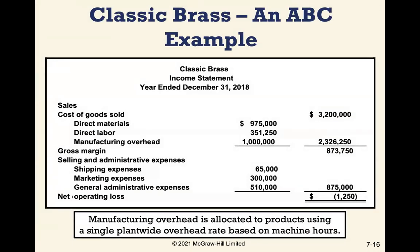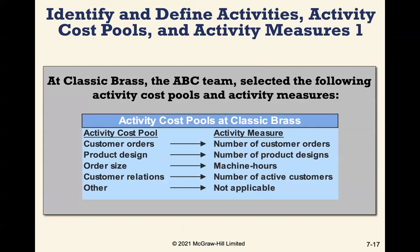We have a company called Classic Brass which makes various brass fittings. Manufacturing overhead is allocated to products using a single plant-wide overhead rate based on machine hours under the traditional system. The activity-based costing team at Classic Brass has selected activity cost pools and measures: customer orders (number of customer orders), product design (number of product designs), order size (machine hours), customer relations (number of active customers), and other (not applicable).